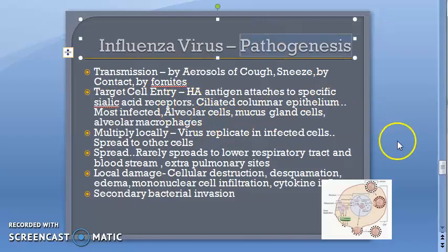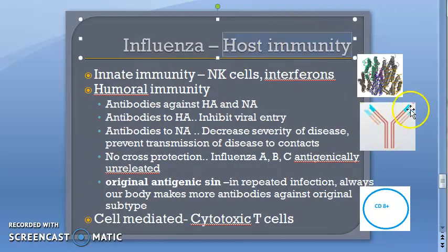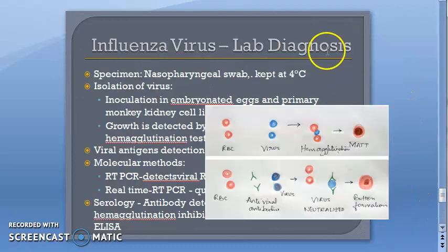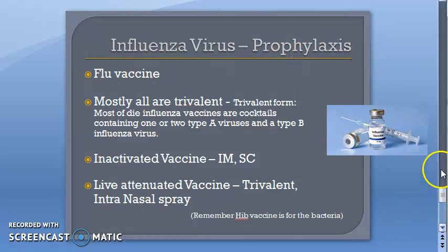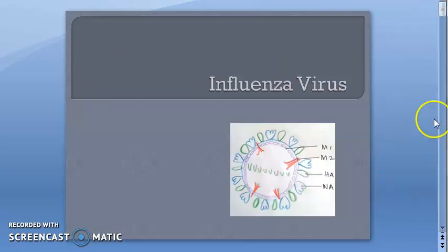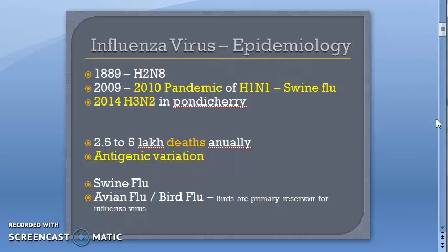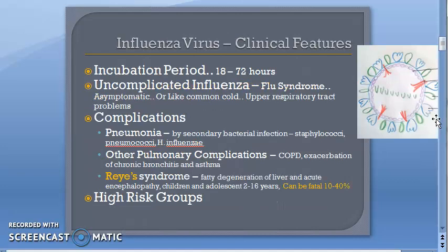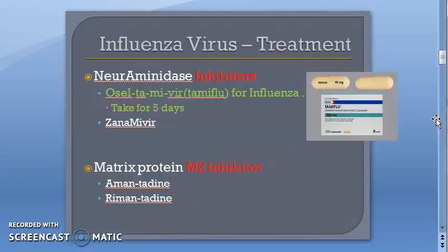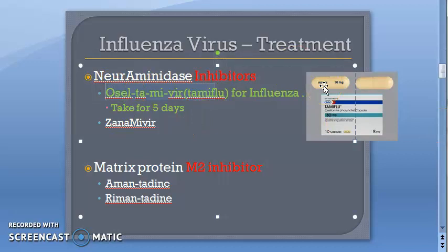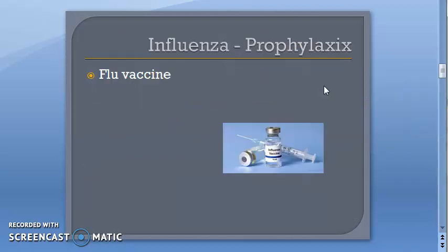In this video we want to look at the pathogenesis of influenza virus, then host immunity, lab diagnosis, and prophylaxis. As a quick recap: influenza is a pandemic that kills lots of people annually. Clinical features include upper respiratory tract problems with possible complications. The treatment for influenza is oseltamivir, also called Tamiflu. There is a flu vaccine for influenza.